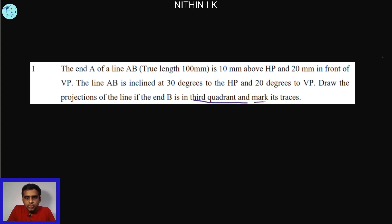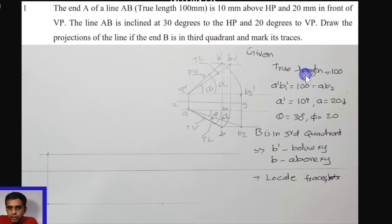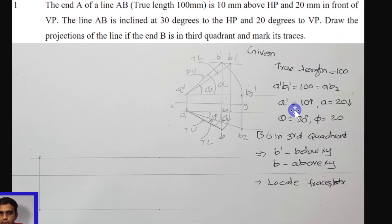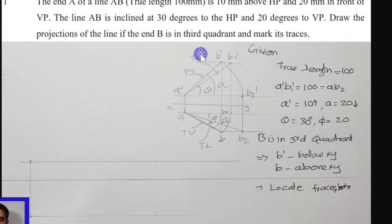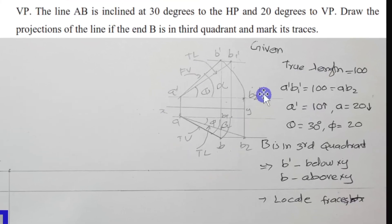The key highlight of this question is that end B is in the third quadrant — this is the highlight of the given data. We will use the rotating line method, as shown in the general figure.